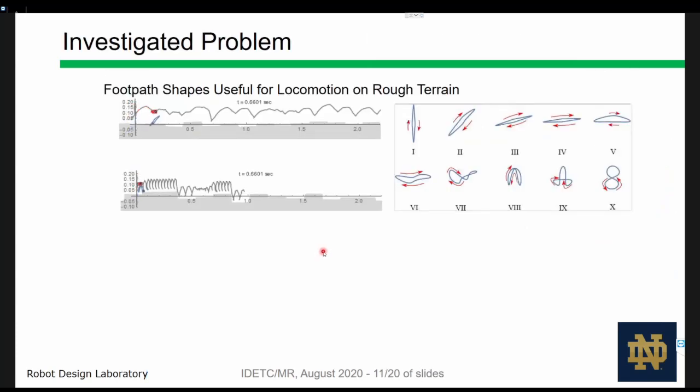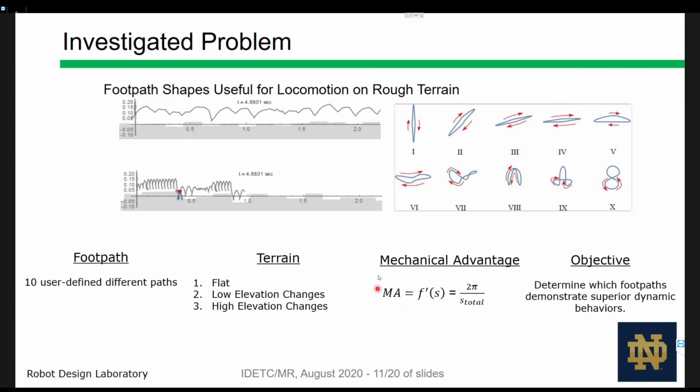Let's revisit the problem we're interested in. Ten different foot path curves were simulated on three different types of terrains including flat, a population of random terrain considered to have low elevation changes, and a population that have high elevation changes. We set the mechanical advantage to be constant. Performance was measured as average horizontal velocity after 10 seconds. In the next few slides, we highlight paths 5, 3, 1, and 2.